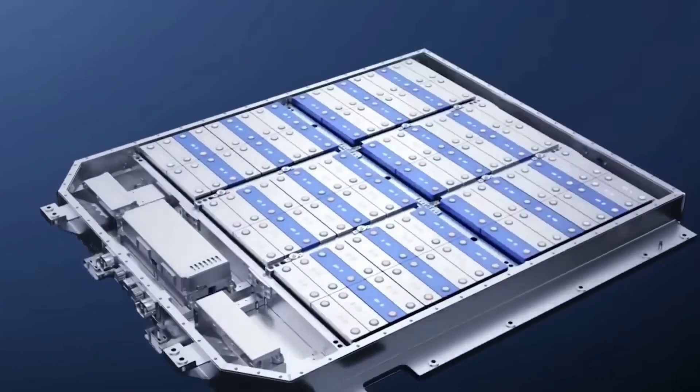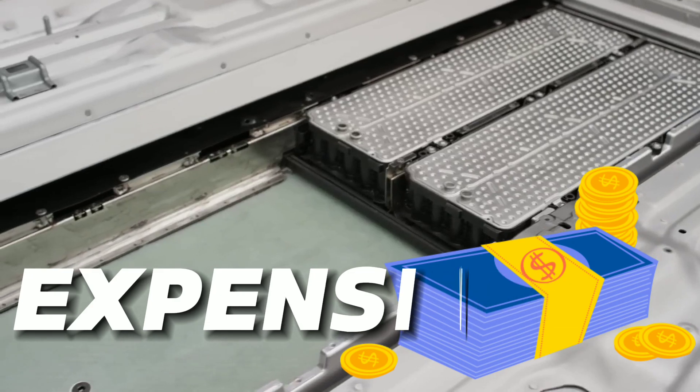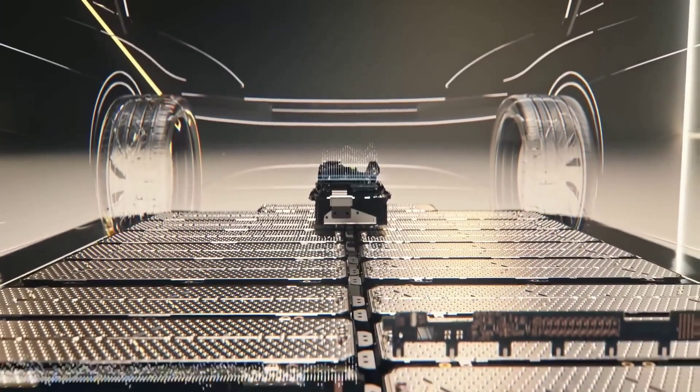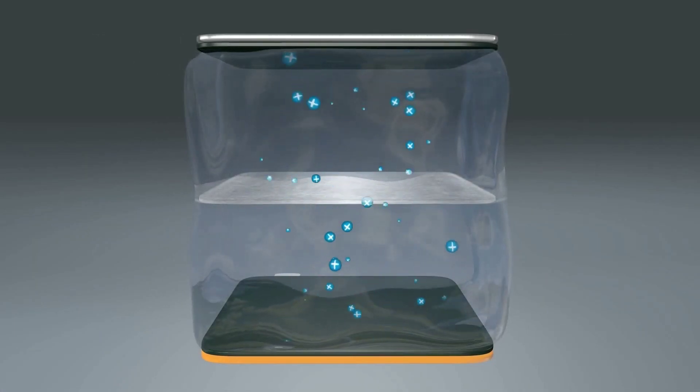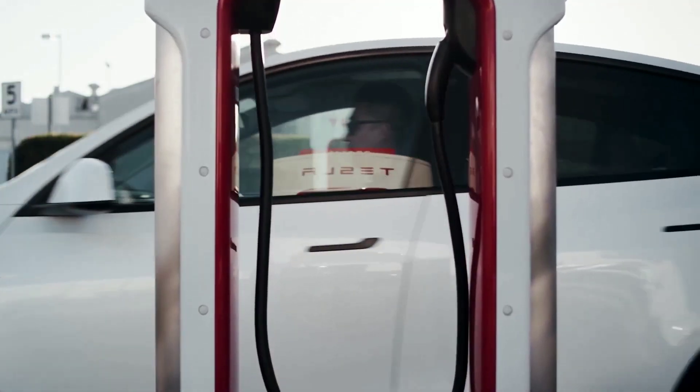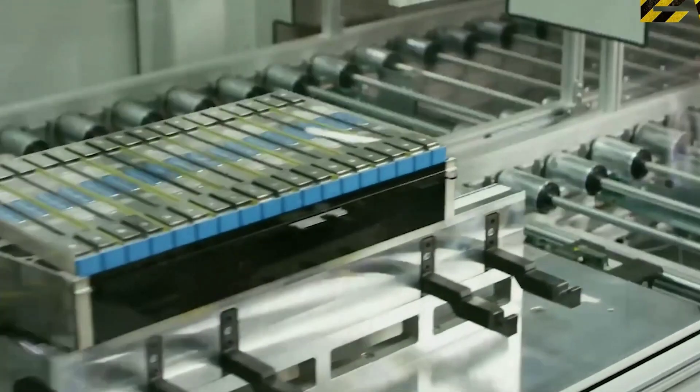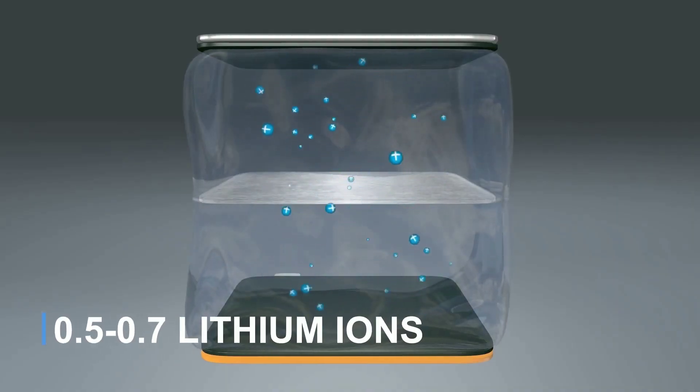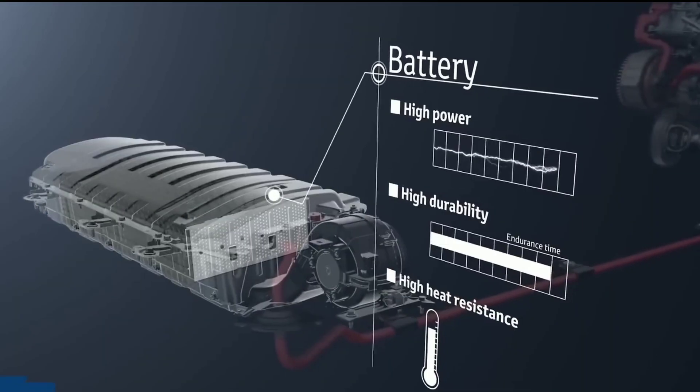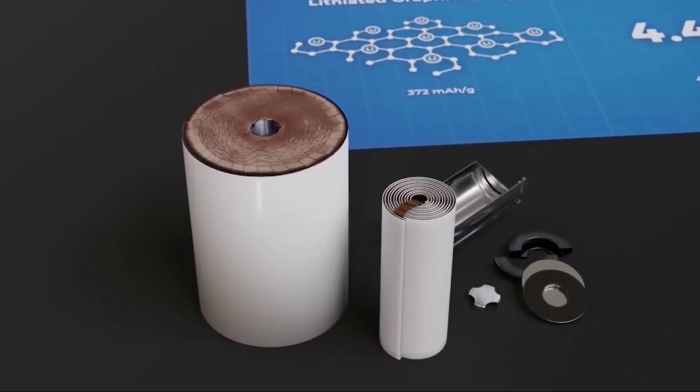However, lithium-ion batteries also have many drawbacks. First of all, they are expensive. The battery accounts for about 30% of the total cost of an EV. And the cost of lithium-ion batteries depends largely on the price of their key components, the cathode and the anode. The cathode is the positive electrode that releases electrons during discharge, while the anode is the negative electrode that receives electrons during charge. The most widely used cathode material for lithium-ion batteries is nickel-manganese cobalt oxide, NMC, which offers a good balance of energy density, power density, safety, and durability.